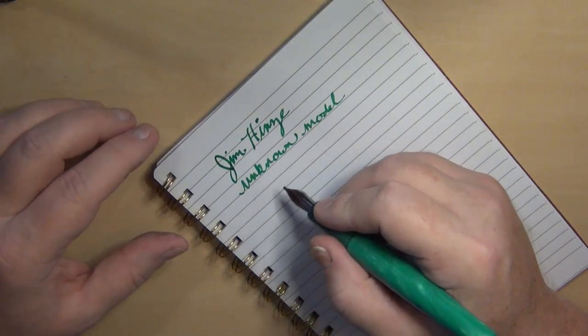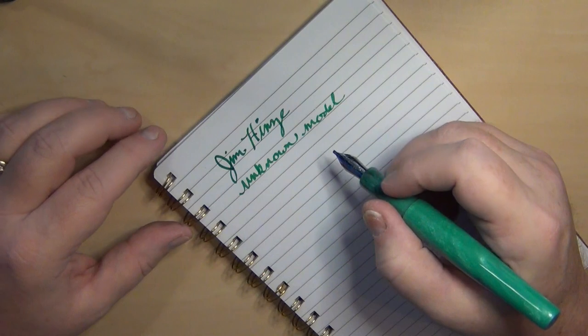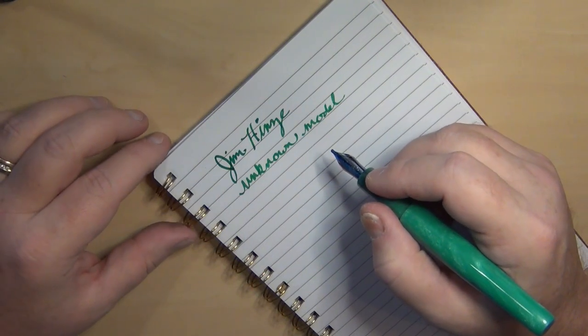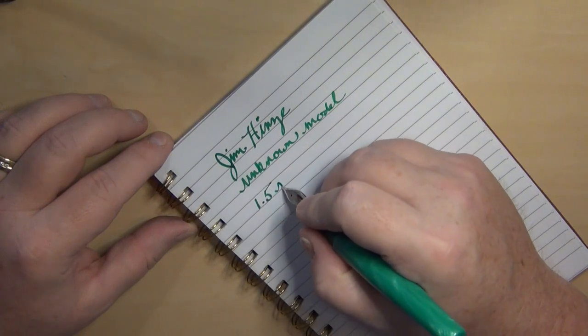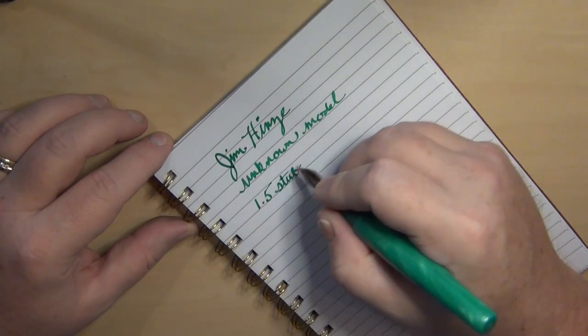I can tell you I like on the stub nibs and the broader nibs—I like the way my handwriting is a little better. I do like how it makes me flow a little better. That's one of the reasons why I kind of like the 1.1 stubs. But this is a 1.5 stub nib.